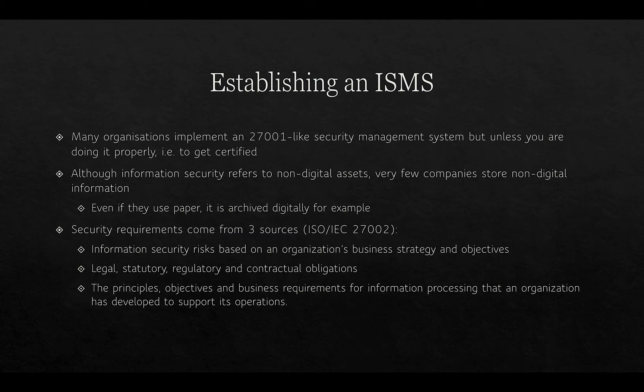Many organizations implement a 27001-like security management system but fail to go through and get certified. Although information security refers to non-digital assets, very few companies store non-digital information — even if they use paper, it is usually archived digitally. The security requirements come from three sources: information security risks based on an organization's business strategies and objectives; legal, statutory, regulatory and contractual obligations; and the principal objectives and business requirements for information processing that an organization has developed to support its operations.